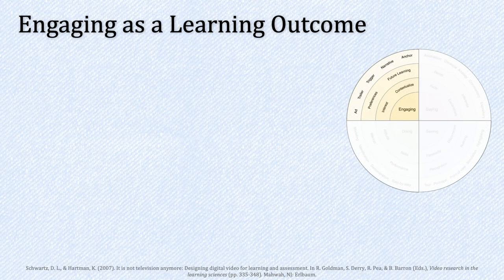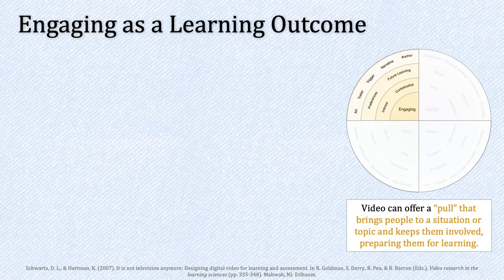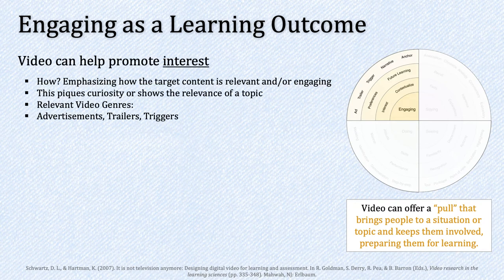Another quadrant of the map focuses on engaging as a learning outcome. This has to do with video offering a pull that brings people to a situation or topic and keeps them involved, preparing them for learning. Video can promote interest by emphasizing how target content is relevant and engaging — piquing curiosity or showing the relevance of a topic. Relevant video genres include advertisements, trailers, and triggers.